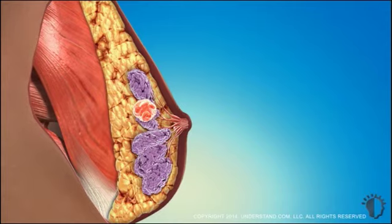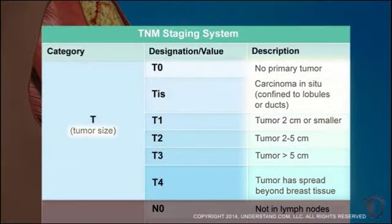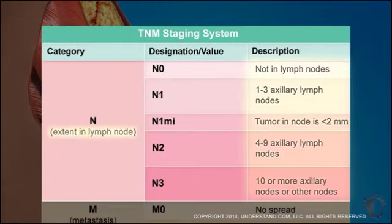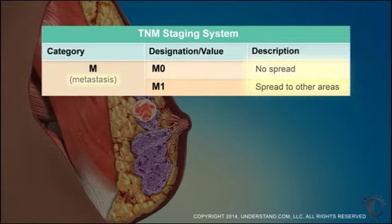The most common staging system is the TNM classification. The T value correlates to the size of the tumor. The N value describes if the tumor has spread to the lymph nodes and the number of positive nodes. The M value describes whether the tumor has metastasized.